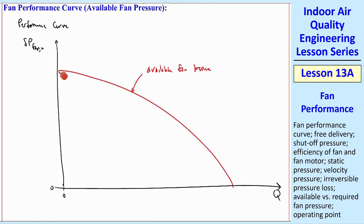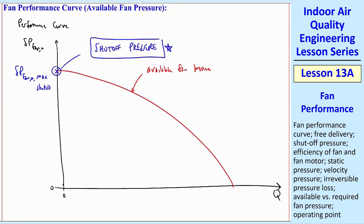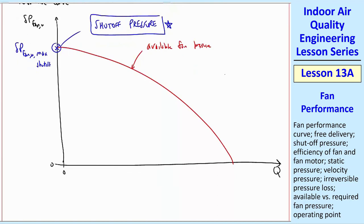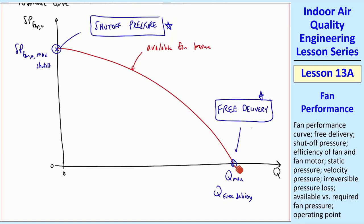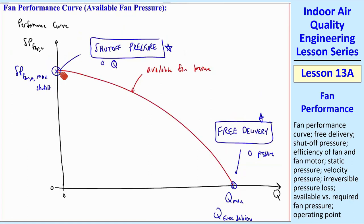There are a few key points to label on the curve. Where the flow rate is zero, we call this delta P fan u max, or the shutoff pressure — when flow is shutoff you have some maximum pressure. Delta P is the change in pressure across the fan. We also have Q max, or Q free delivery, which is the opposite of shutoff pressure: at free delivery we have zero pressure but a maximum flow rate, whereas at shutoff we have zero flow rate but maximum pressure.